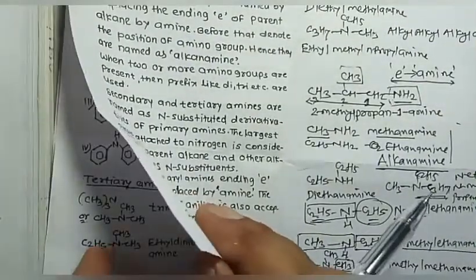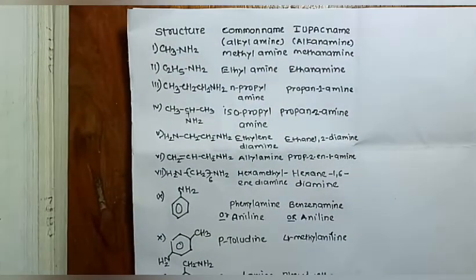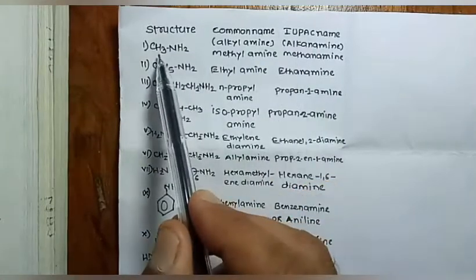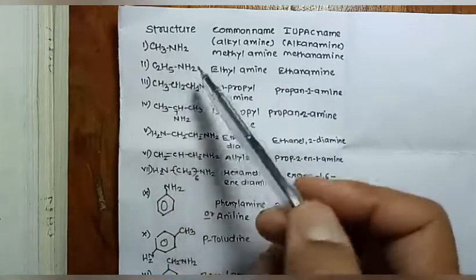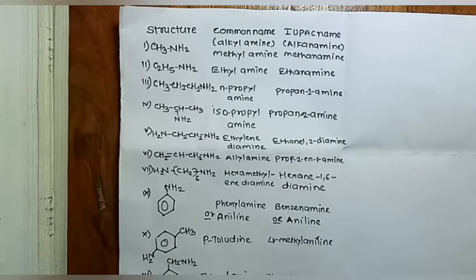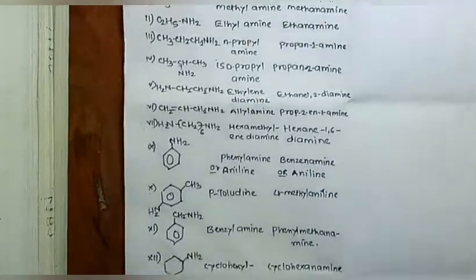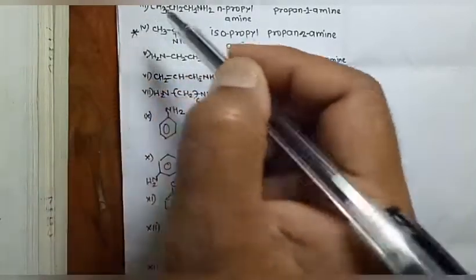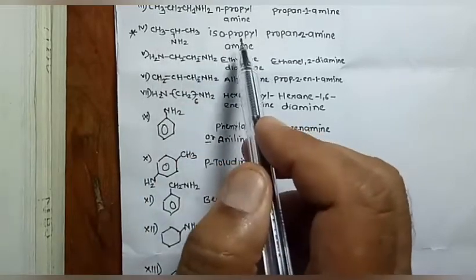Now let's look at some examples comparing common and IUPAC names. For primary amines: CH₃NH₂ is 'methylamine' (common) and 'methanamine' (IUPAC). C₂H₅NH₂ is 'ethylamine' / 'ethanamine'. n-Propylamine is 'propan-1-amine'. The isopropyl amine is 'propan-2-amine' — this structure was asked in a board examination.